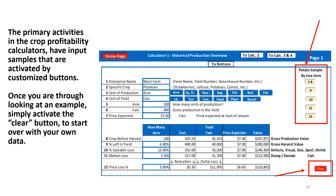The primary activities in the Crop Profitability Calculators have input samples that are activated by customized buttons. Once you are through looking at an example, simply activate the Clear button to start over with your own data.